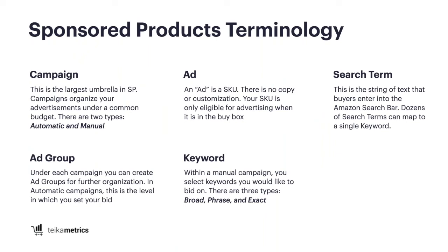Before we get into the meat of the presentation, let's go through some terminology. A campaign is the largest umbrella in sponsored products — this is how you organize your advertisements, and everything in a campaign is under one single budget. There are two campaign types: automatic and manual. Underneath a campaign, you have ad groups, where you can group your products further. On the automatic side, that's where you'll set your bid; on the manual side, you have an additional layer — the keyword.